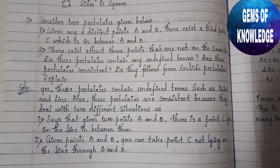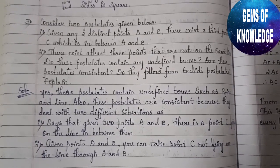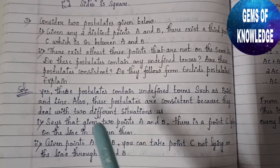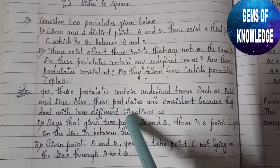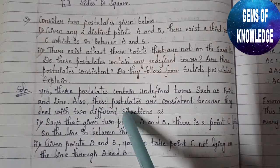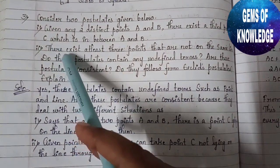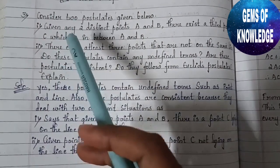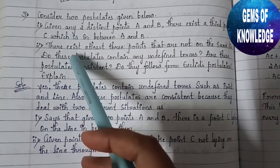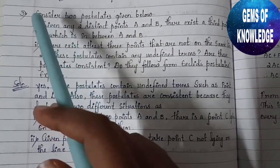Hello everyone, welcome back to my channel Gems of Knowledge. Today we are going to learn Exercise 2.1 from the chapter Introduction to Euclid's Geometry. We have already completed two questions, so today we are going to learn the third question.